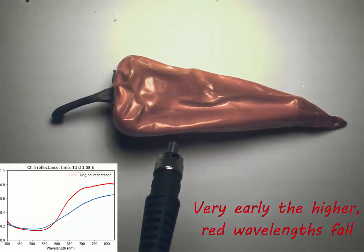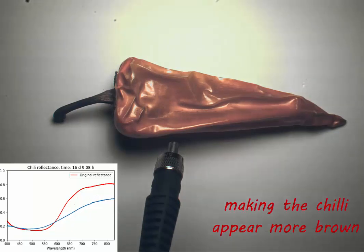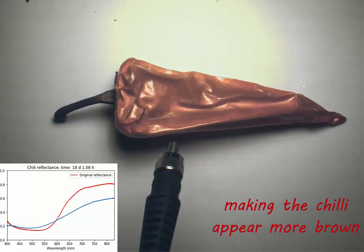Initially, the chilli looks very red, which are the higher wavelengths, but these begin to fall, making the chilli appear more brown as it ages and dries out.